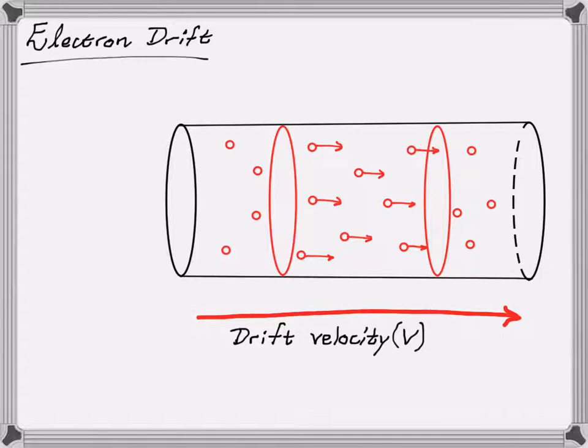So if we take a little section of this conductor from this point to this point, and we consider all the charges in there that are moving, they're all moving in the same direction in a certain amount of time T. So the charges will move through a distance D in that time.